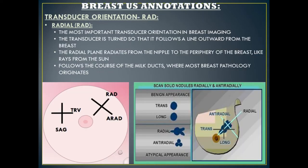Our next method of breast ultrasound annotation is a transducer orientation called radial, or RAD for short. This is the most important transducer orientation in breast imaging. The transducer is turned so that it follows a line outward from the breast — I like to think of rays of a sun. The radial plane radiates from the nipple to the periphery of the breast, and it's important because it follows the course of the milk ducts, where most breast pathology originates, which is why it's the most accurate plane to use.